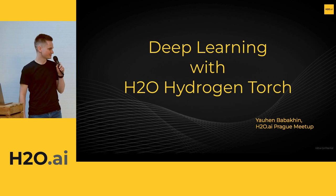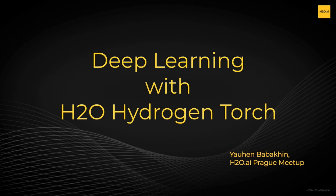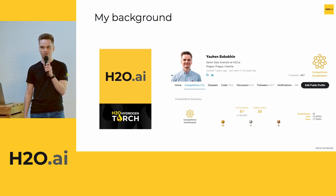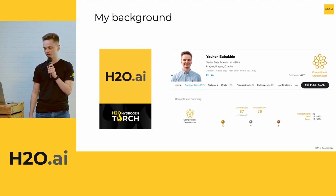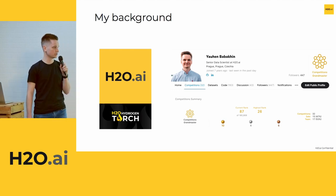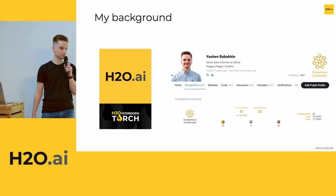Hi everyone. Today I'll be talking about deep learning, specifically deep learning with H2O Hydrogen Torch. A couple of words about me: I work at H2O AI for three years at the Prague office. My main focus at H2O is deep learning and specifically computer vision applications. For the last year we built a product, H2O Hydrogen Torch, that I'll be talking about today. I'm also a Kaggle competitions grandmaster — I have about 10 gold medals there.